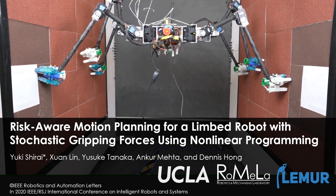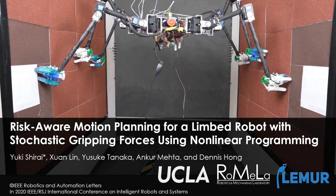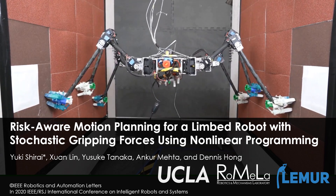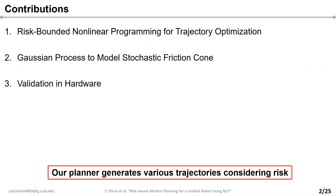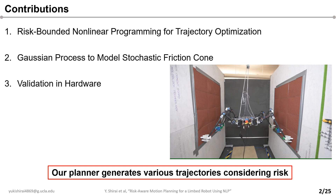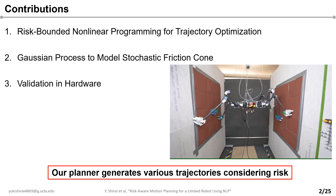Today, I'm going to present a motion planning algorithm for RIM robots under stochastic contact forces. In this work, we present three contributions that allow a robot to plan various motions based on user specifications. Our planner generates trajectories including aggressive tripod gait by considering risk of the mission, as shown in the video.